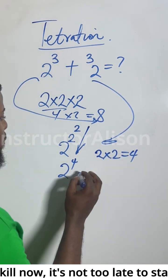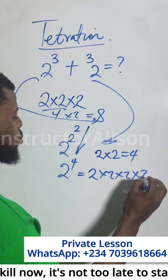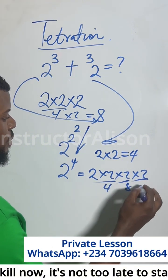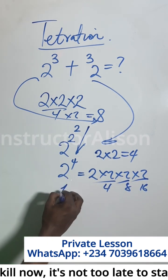So what is 2 to the power of 4? The same thing is 2 times 2 times 2 times 2. 2 times 2 gives you 4, times 2 gives you 8, times 2 gives you 16. That means this is giving us 16.